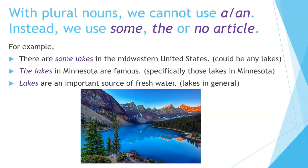With plural nouns, we cannot use a or an. Instead, we use some, the, or no article at all. For example, there are some lakes in the Midwestern United States — could be any lakes. The lakes in Minnesota are famous — specifically those lakes in Minnesota. Lakes are an important source of fresh water — lakes in general.